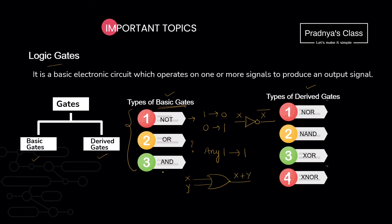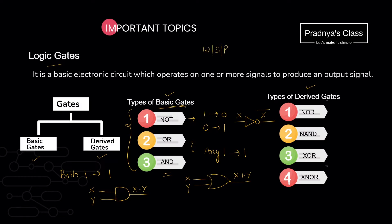Now it's time to discuss AND gate. AND gate also works on two or more signals. Both inputs should be 1; then only the output will be 1. The symbol for AND gate is just like the letter D. It also produces a single output. If the input variables are x and y, the operation we will write as x dot y. Keep in mind the working, symbol, and result of these logic gates.